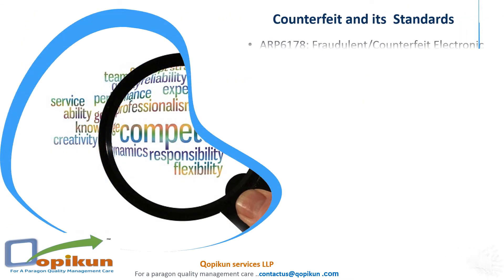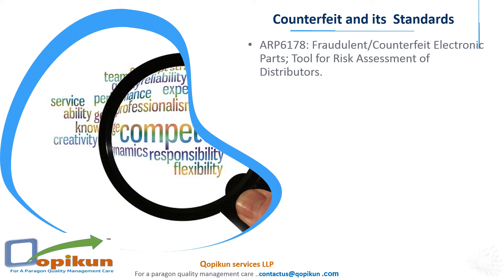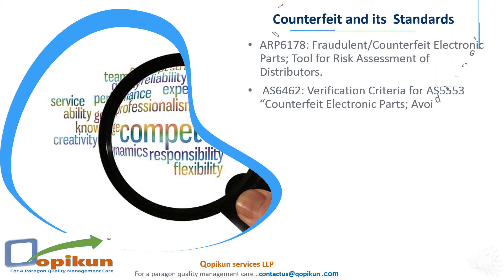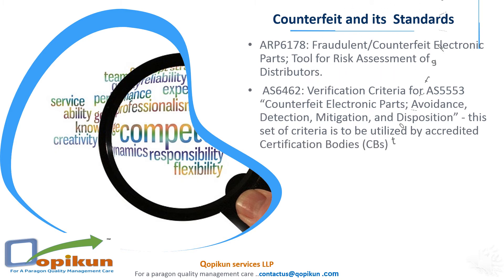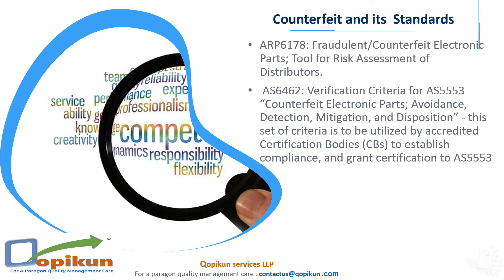Counterfeit and its Standards — Point 3: ARP 6178, Fraudulent/Counterfeit Electronic Parts Tool for Risk Assessment of Distributors. AS6462 — Verification Criteria for AS5553 Counterfeit Electronic Parts Avoidance, Detection, Mitigation, and Disposition. This set of criteria is to be utilized by accredited certification bodies (CBs) to establish compliance and grant certification to AS5553.